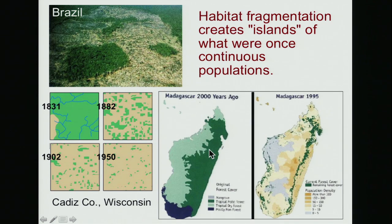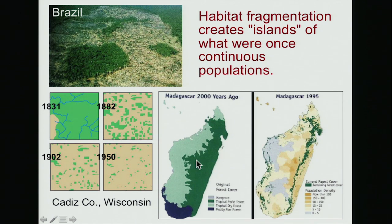Madagascar went through this quite severely. The entire island — one of the largest islands on earth — was predominantly covered with rainforest on the east side and dry forest on the west side. These forests had been reduced to just tiny fragments by 1995.